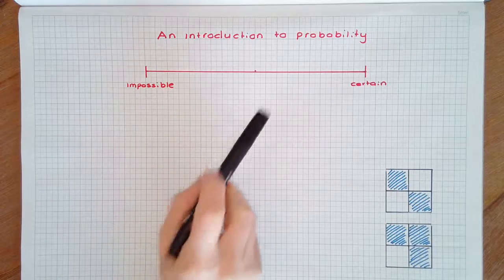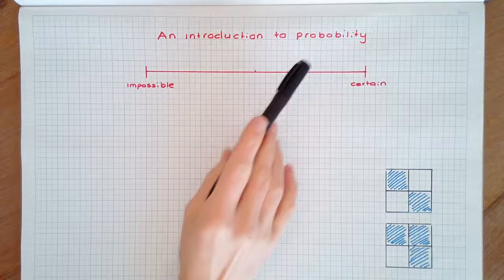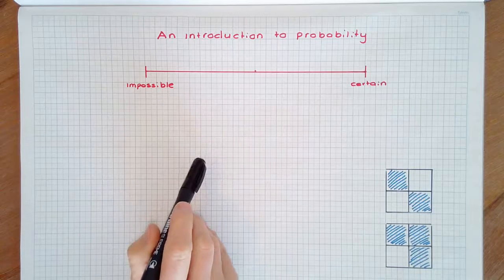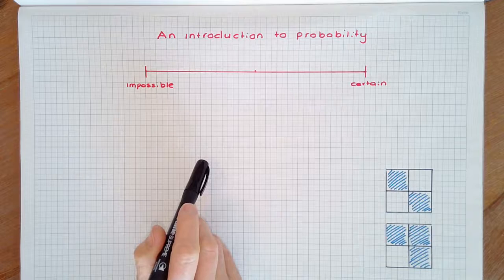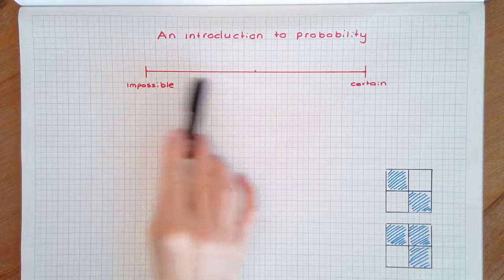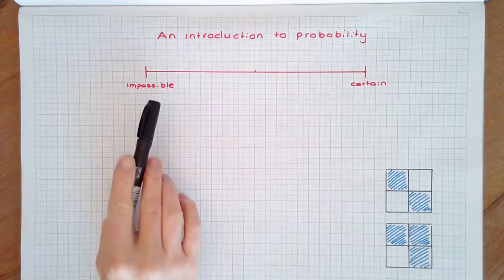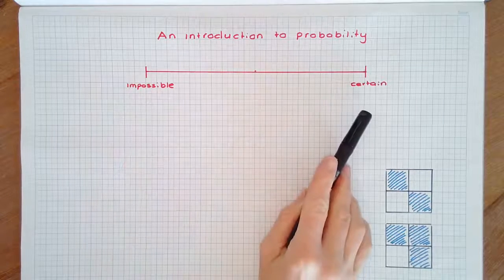In this video we're going to have a look at the language of probability. Probability is a measurement of the chance or likelihood of an event happening. The chance of an event happening can be shown on a probability scale from impossible, having no chance, to certain.